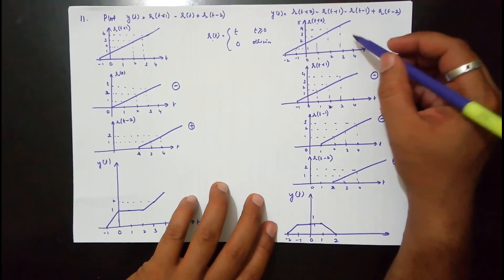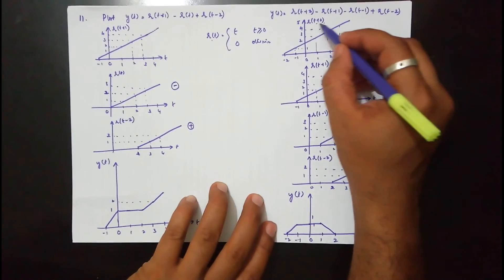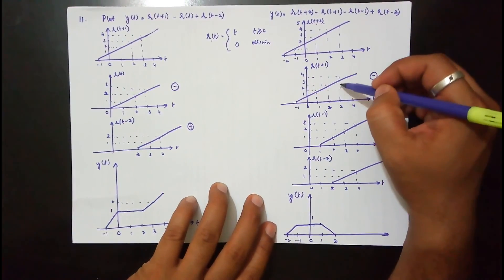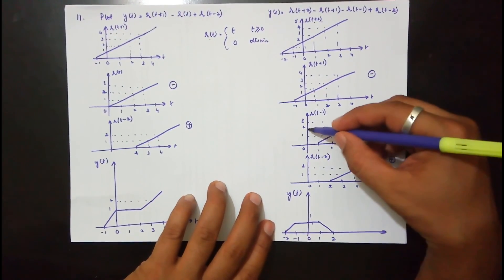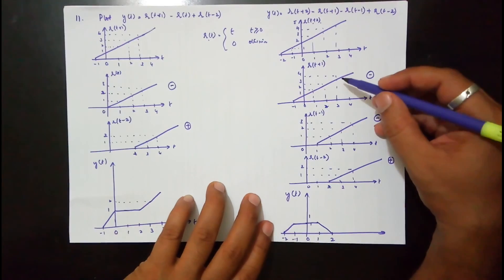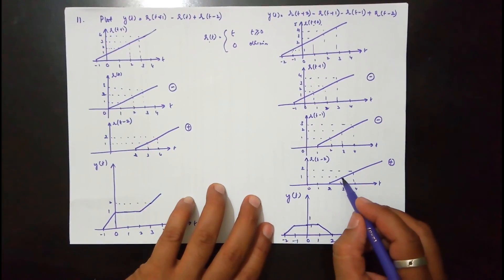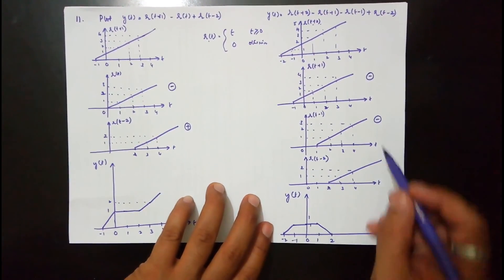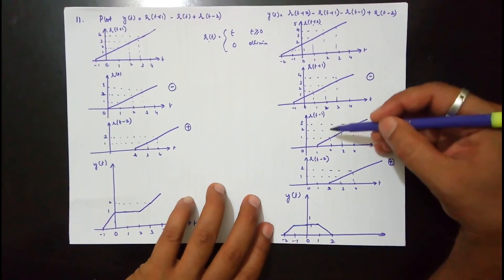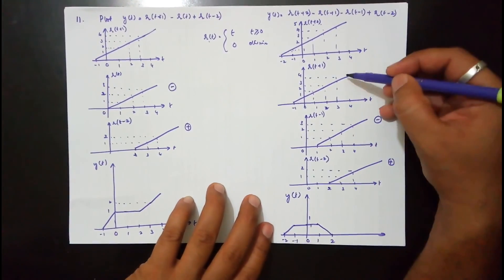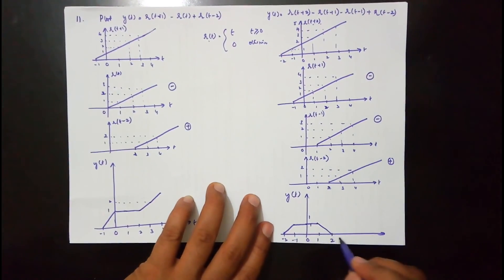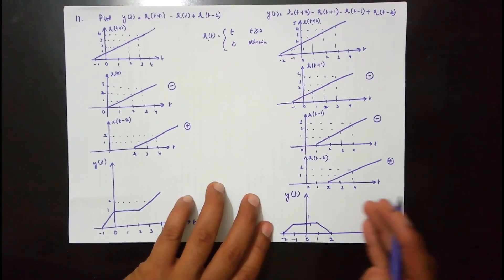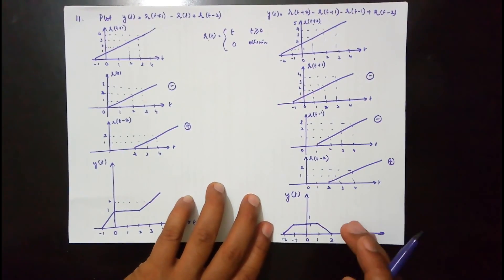At t=3: r(t+2)=5, r(t+1)=4, so 5−4=1; r(t−1)=2, so 1−2=−1; r(t−2)=1, so plus 1. Total: 5−4−2+1 = 0. So it will be 0 at t=3, and for all time intervals to the right of t=2 it will be 0. So this is the final waveform.